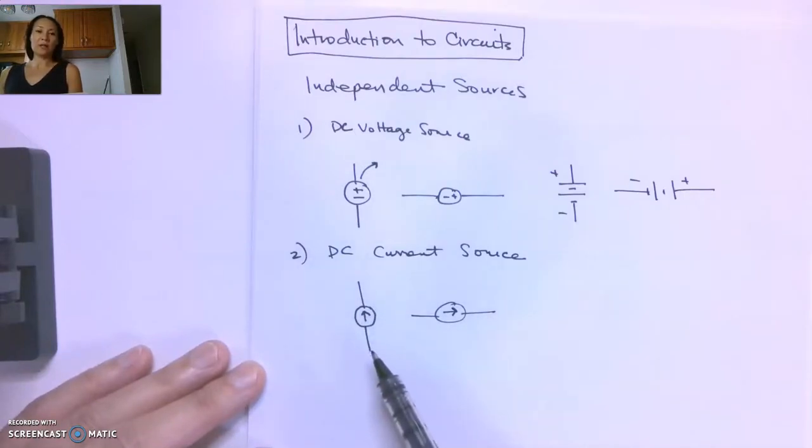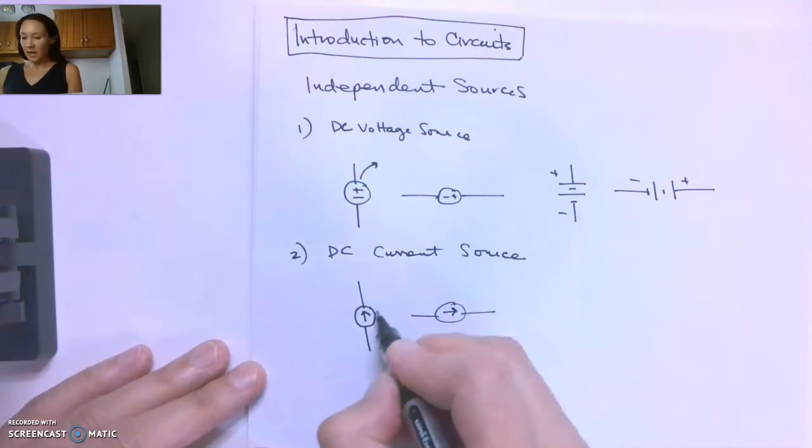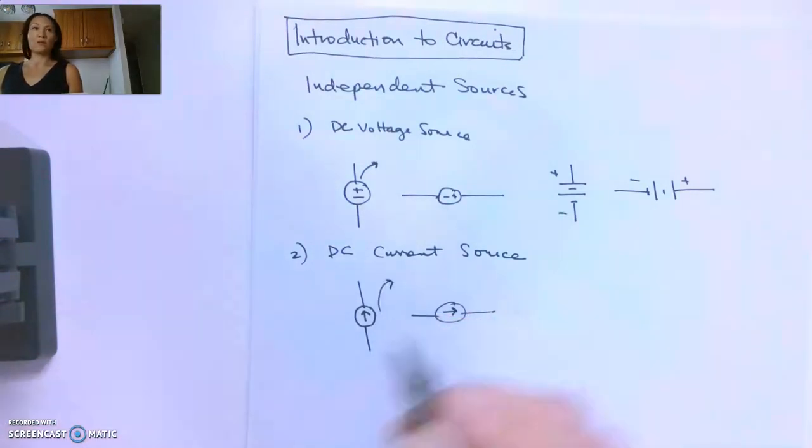It's going to supply a constant preset current. The amount of voltage that is delivered depends on the resistive load that's connected to this, and the arrow indicates the direction of current flow that's being generated.